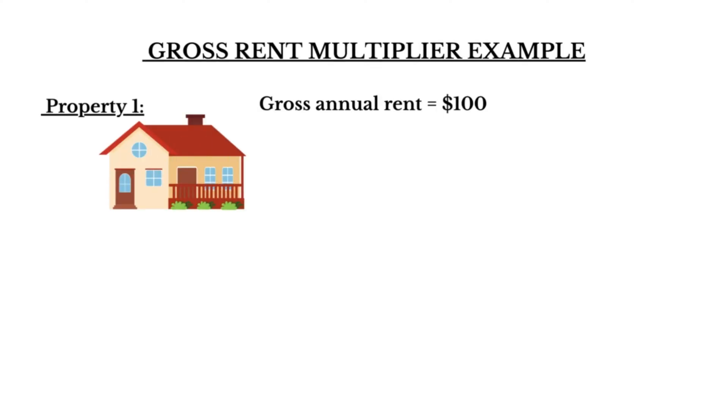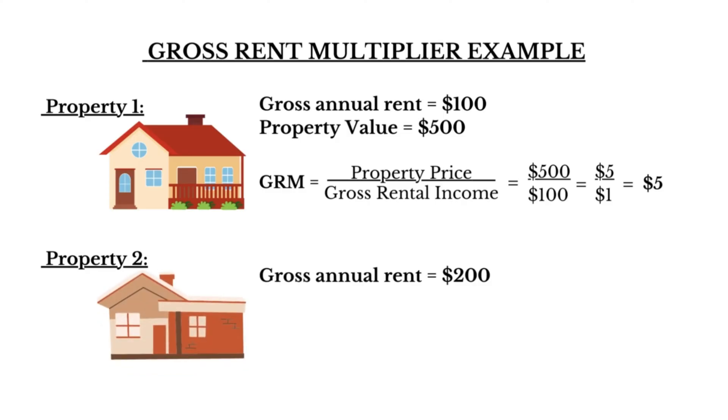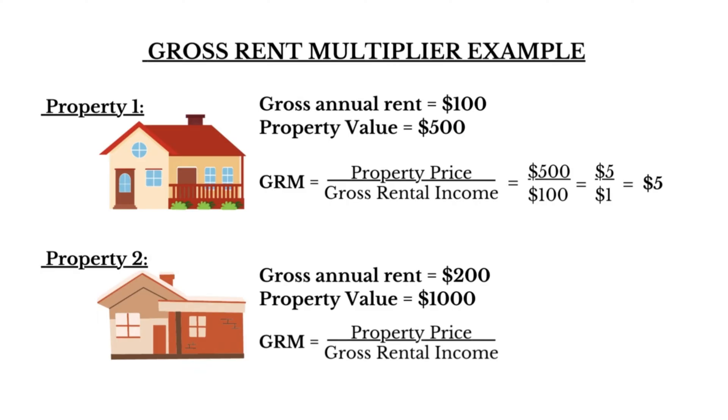To find the GRM, we look at how much money you make each year from renting the property. Let's say you make $100 in a year, and the property is worth $500. To find the GRM, we divide the property value, $500, by the annual income, $100, giving us a GRM of 5. This means for every dollar you make in a year, the property is worth $5. If another property makes $200 a year and is worth $1,000, the GRM would also be 5 — both properties are valued the same relative to the money they make. That's the gross rent multiplier explained in a nutshell.